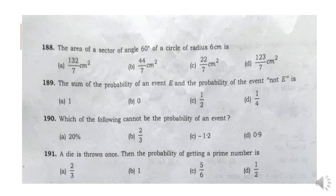Question 188: The area of a sector of angle 60 degrees of a circle of radius 6 cm is Option A: 132 by 7 cm squared.